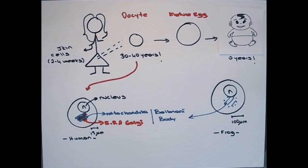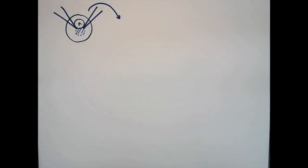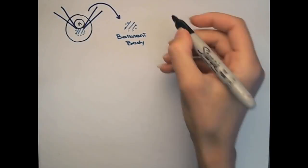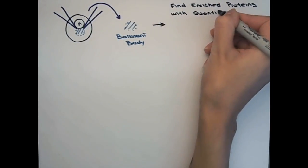We studied frog oocytes, which are very similar to human oocytes. First, we removed balbionibodies from frog oocytes with forceps and determined their protein composition with quantitative mass spectrometry.